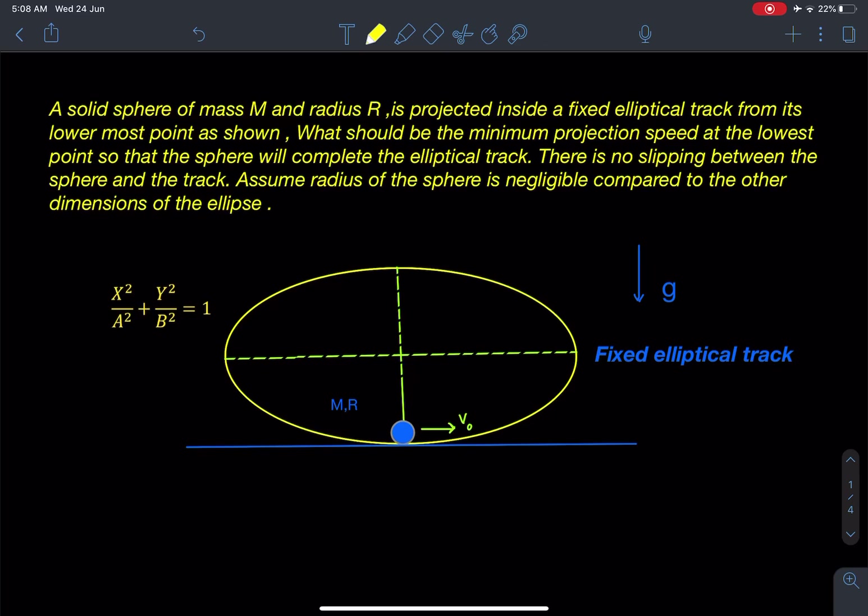It is given: a solid sphere of mass M and radius R is projected inside a fixed elliptical track from its lowermost point as shown. What should be the minimum projection speed at the lowest point so that the sphere will complete the elliptical track?